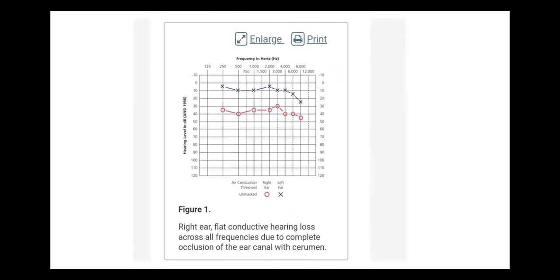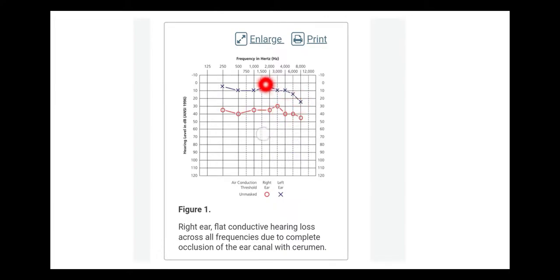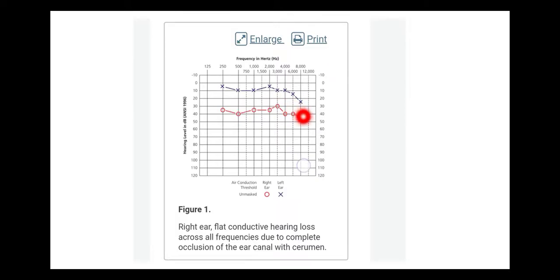Please remember: the right ear marking is by red ink and the left ear by blue ink. R - right, R - red. The red is for the right side.